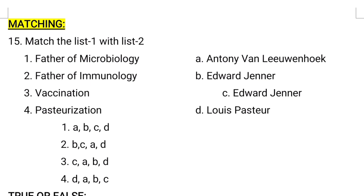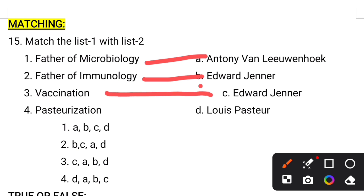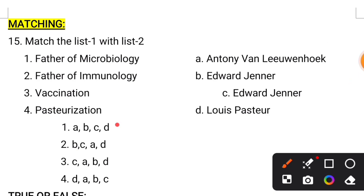Let's see the next category: match the list. Match List 1 with List 2. Father of Microbiology: Antonie van Leeuwenhoek is considered the Father of Microbiology. Father of Immunology: Edward Jenner, as the vaccination process was first identified by him. Pasteurization was invented by Louis Pasteur. The correct match is the first one.